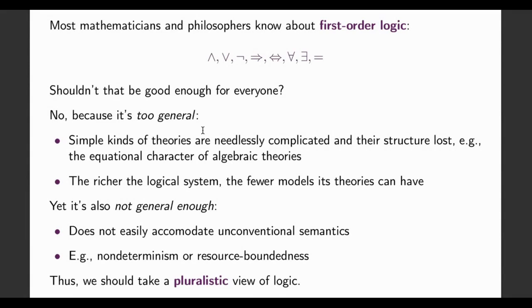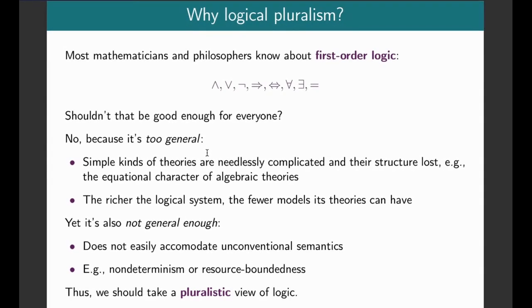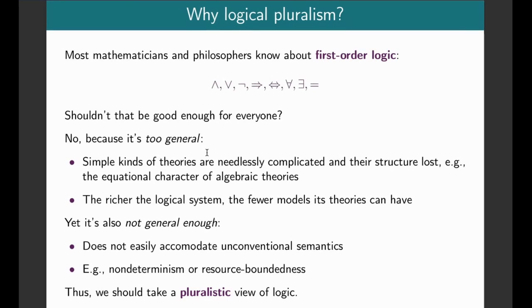One reason is that in many settings, it's too general for its own good. If you have certain kinds of theories that have more constrained structures, for example, the algebraic theories are equational in nature, then this structure is sort of obscured by the formalism of first-order logic. But there's a more important reason: the richer your logical system is, the fewer kinds of semantics you can assign to it.